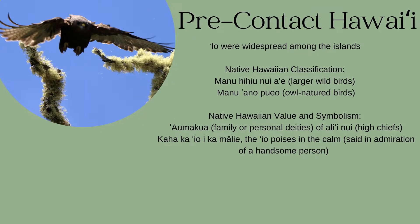Before Western contact, EO were widespread among the islands. Native Hawaiians classified EO into groups, the Manu-hihiu-nui-ae and the Manu-ano-pueo, meaning larger wild birds and owl-natured birds.